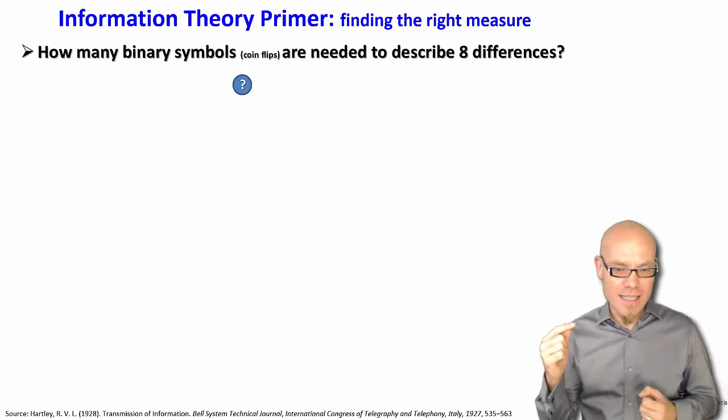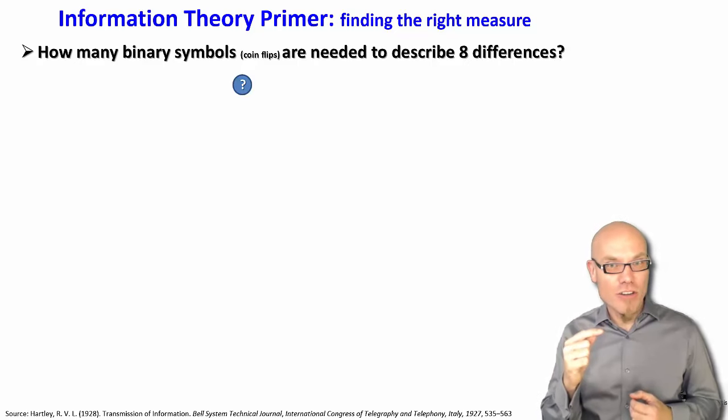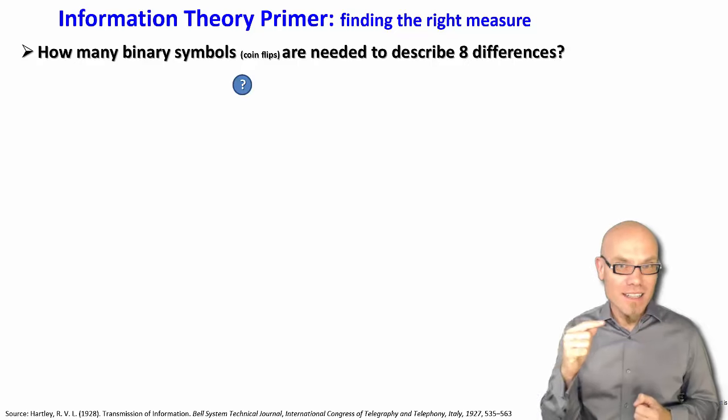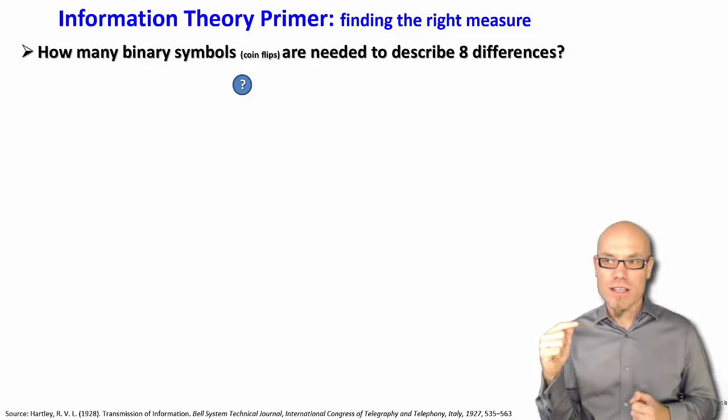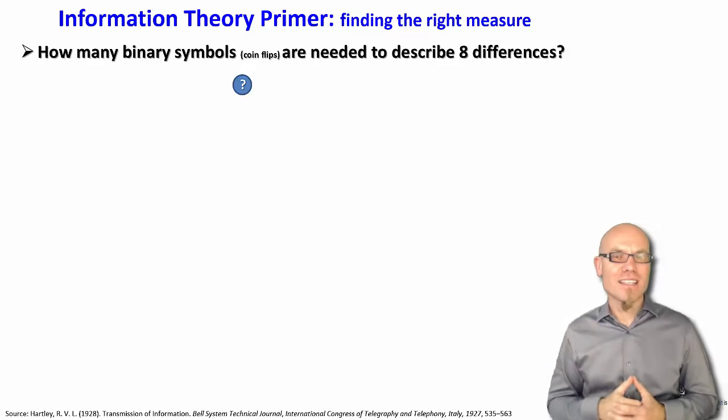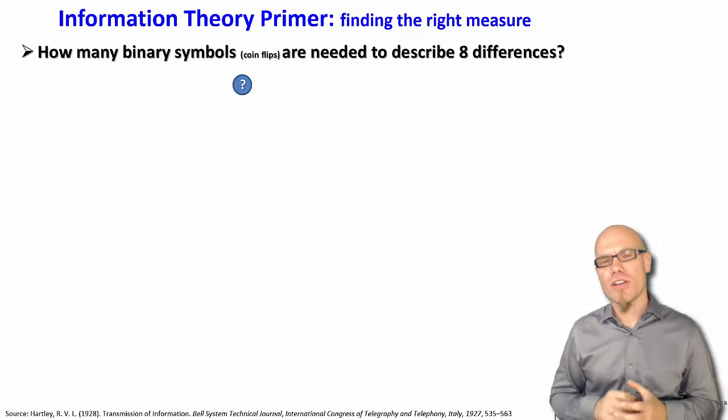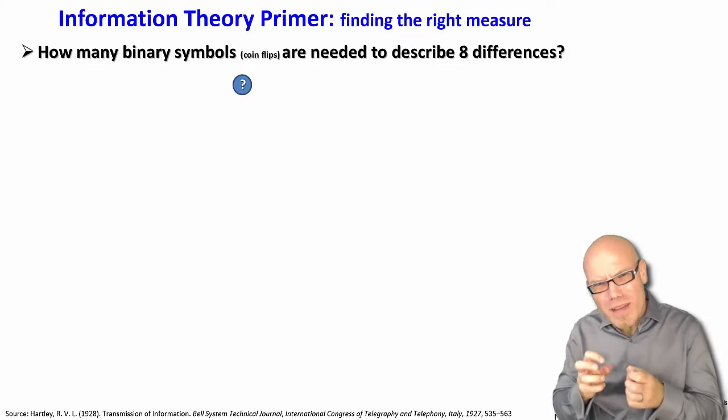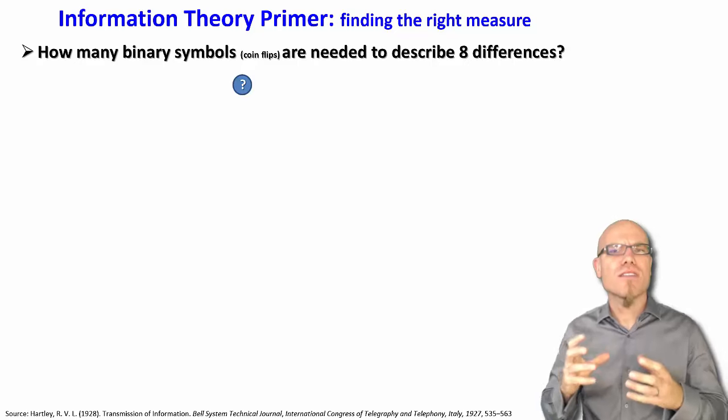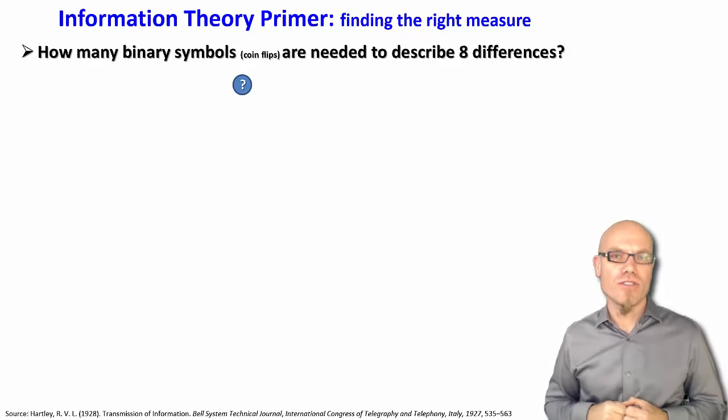They basically send a signal, an electronic signal, or they don't. And in a fiber optic cable, they send a little piece of light or they don't. So that's a binary choice. Either there is or there's not. And you can use this most fundamental way of looking at information to construct different choices and to count different choices.